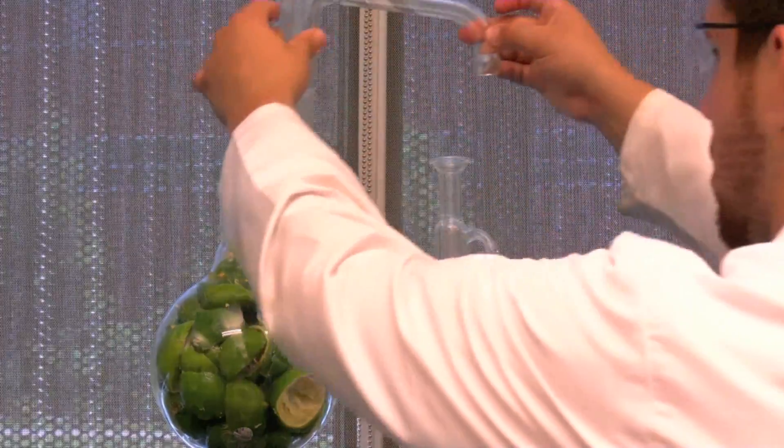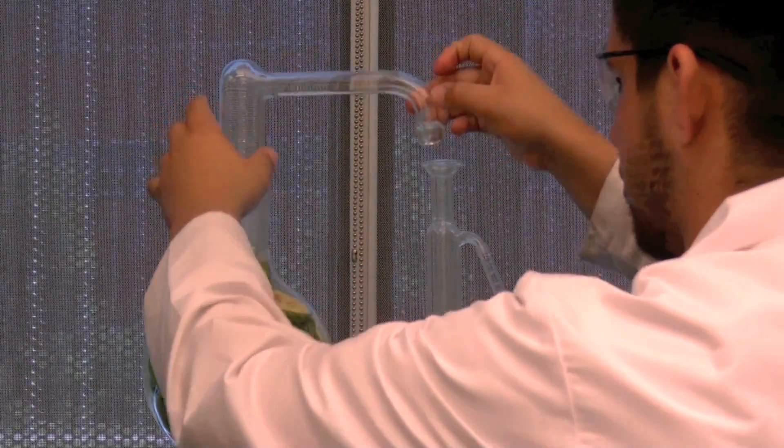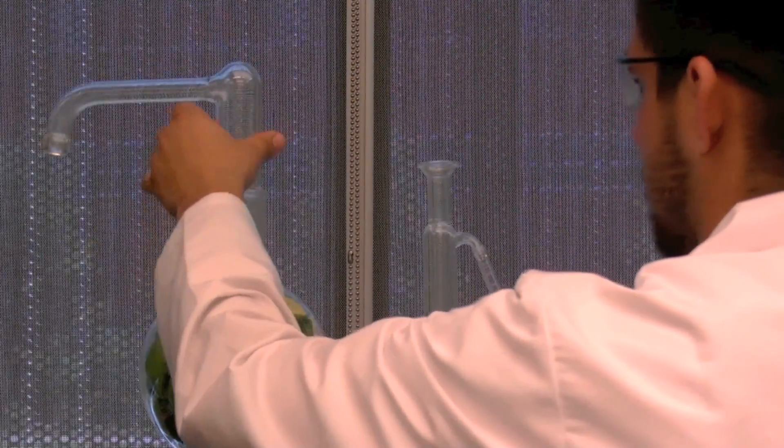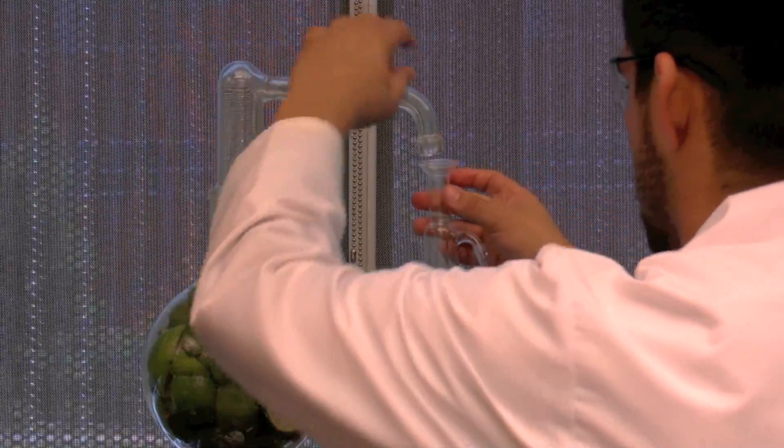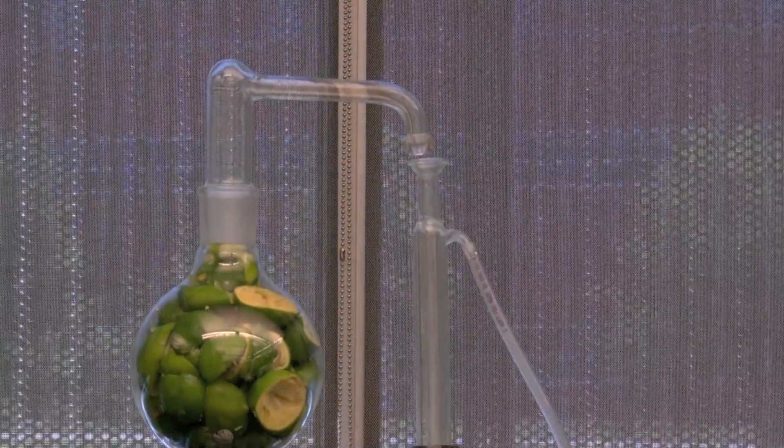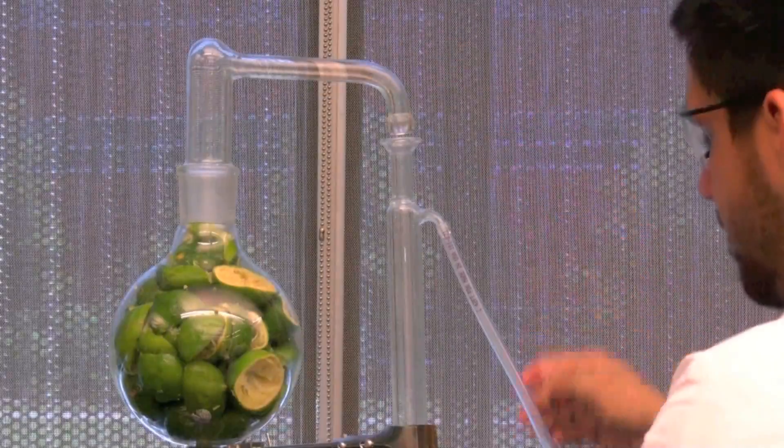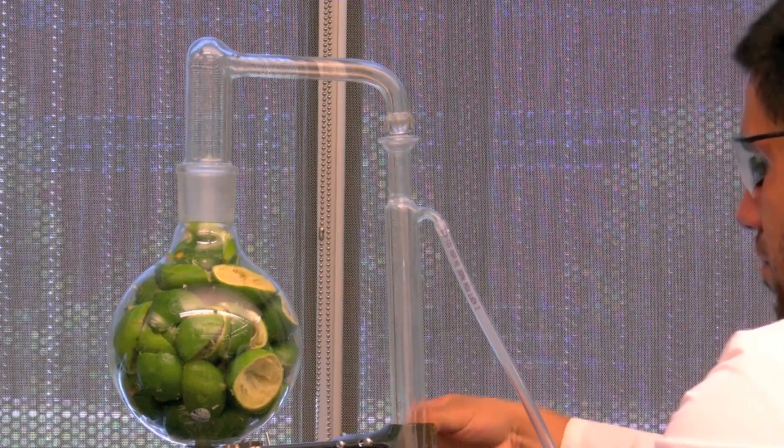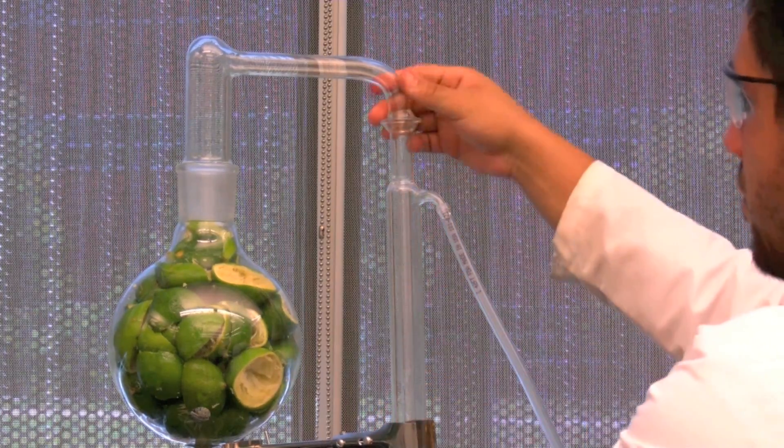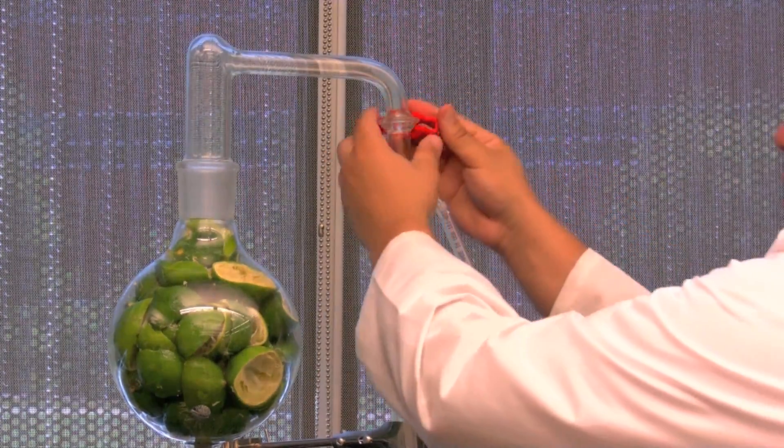Coat both ground glass joints of the still head with a thin layer of silicone lubricant. Simultaneously connect the still head to the top of the biomass flask and condenser. If the height orientation of the condenser needs adjustment, set the still head on the counter before making adjustments. Secure the still head to the condenser using the red plastic connection clamp.